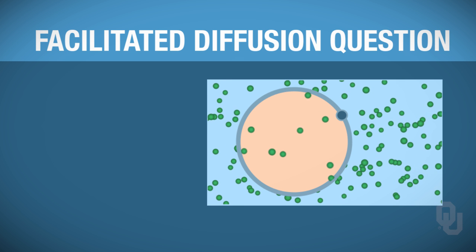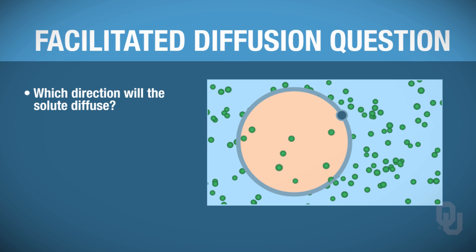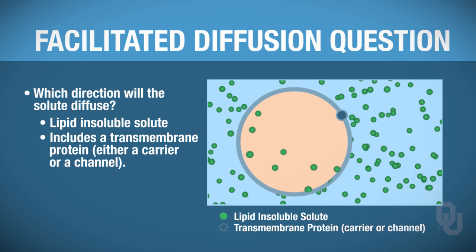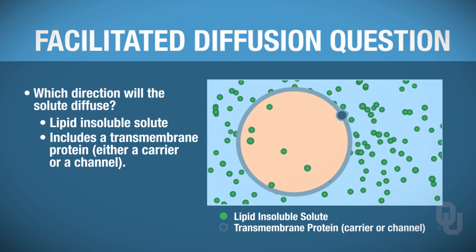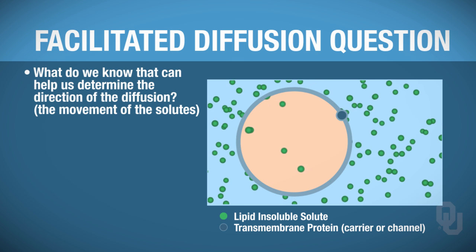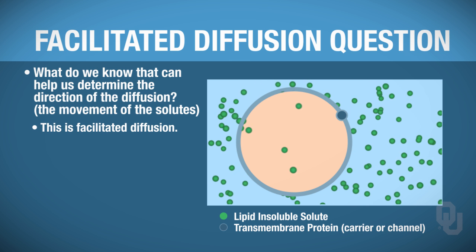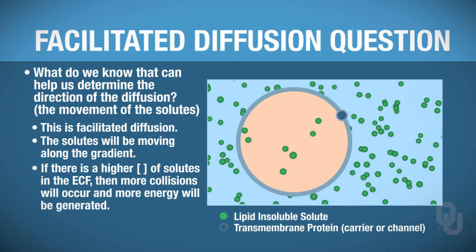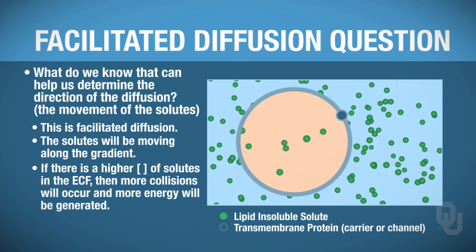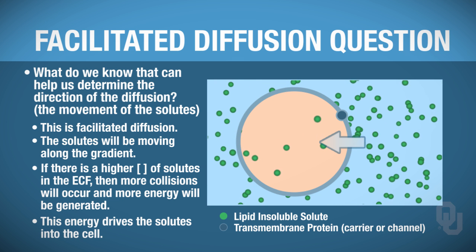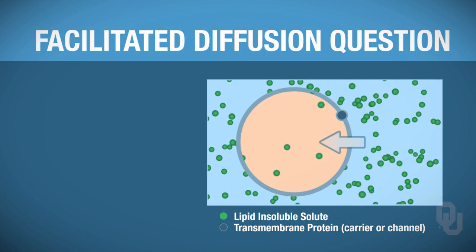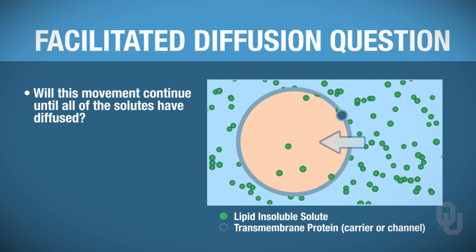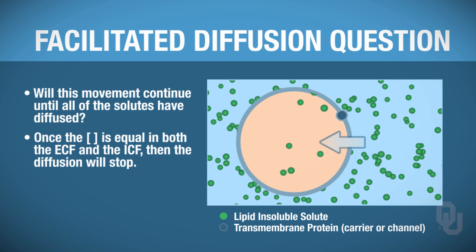Here's a question: pause the video and figure out in which direction this solute will diffuse. The solute is lipid-insoluble and a transmembrane protein is present — either a carrier or a channel. Since this is facilitated diffusion, the solute moves along a gradient. If there's a higher concentration in the extracellular fluid, more collisions generate more energy to drive the solute into the cell. Will this movement continue until all the solute has diffused? No — once the solute reaches equilibrium, meaning the same concentration inside as outside, diffusion will stop.